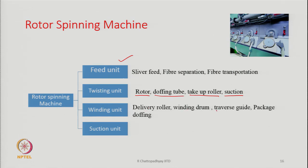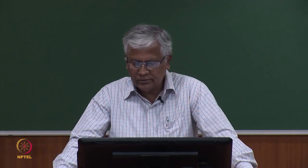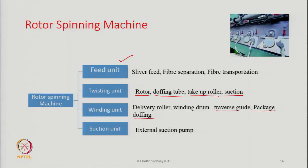This is the part the feeding unit is doing — it is pulling the fiber and feeding it, then fibers have to be separated from each other. The entire feed unit is actually doing this job. Then comes the twisting unit, which consists of a rotor which is the twister, a doffing tube, a take-up roller, and a suction system. In the winding unit we have a delivery roller, a winding drum, a traverse guide, package, and doffing. Then we go to the suction unit where we have an external suction pump to draw air. Fiber transportation is done with the help of air — it is all pneumatic transport of fibers. So we can say the machine has 4 units: feed unit, twisting unit, winding unit, and suction unit.